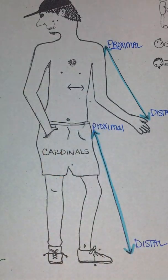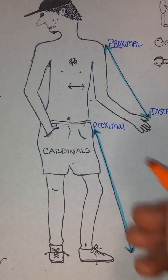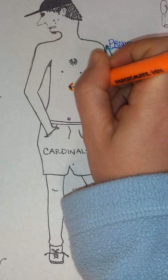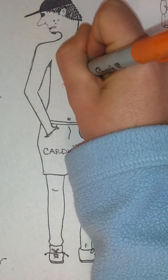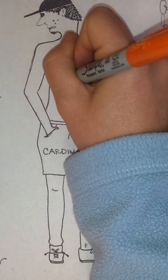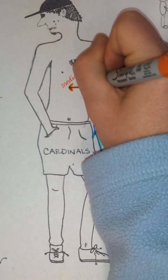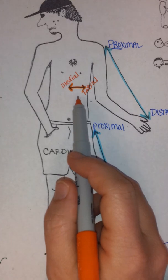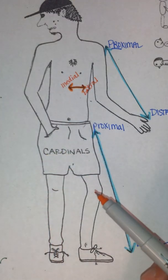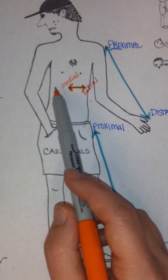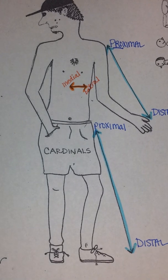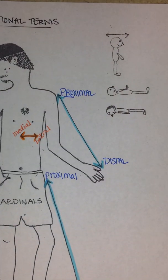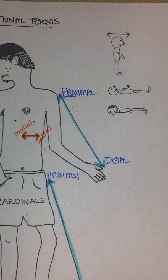Another way we can talk about structures is how close they are to the middle of the body — comparing medial and lateral. For example, the heart is medial in location to a kidney, because the kidneys are on the lateral sides of your body, and the heart is more central. So the heart would actually be superior and medial to a kidney.